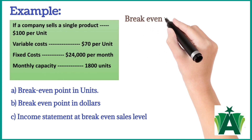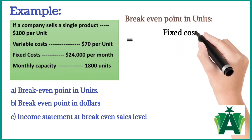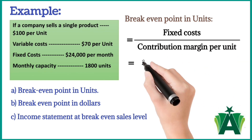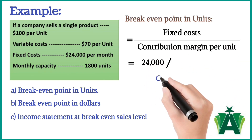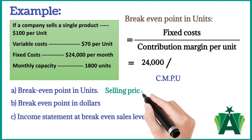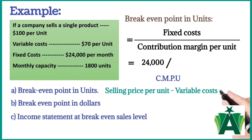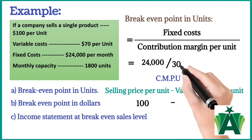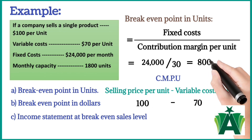Break-even point in units is calculated as fixed costs divided by contribution margin per unit. The amount of fixed costs is $24,000. Contribution margin per unit is calculated as selling price per unit minus variable costs per unit, which equals $30. The break-even point in units is 800.